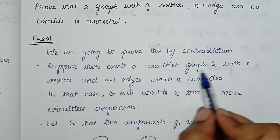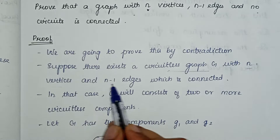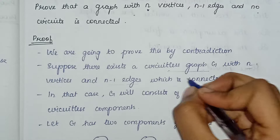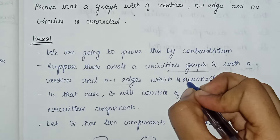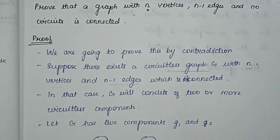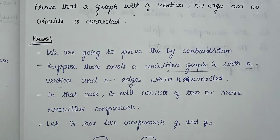We have a circuitless graph with n vertices and n-1 edges. Assume it is disconnected. If the graph is completely disconnected, which is not a circuitless component — that is not a connected graph. So now it is disconnected, and that is why we have circuitless components.